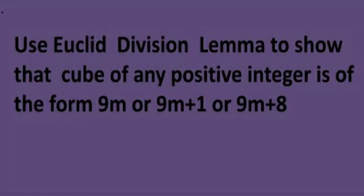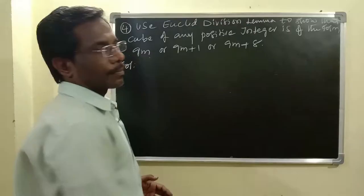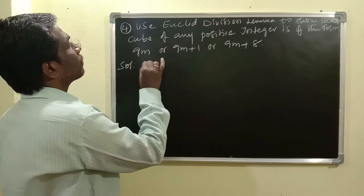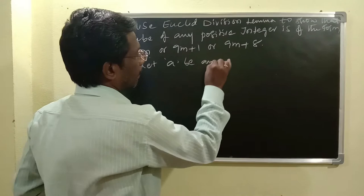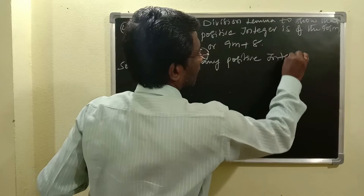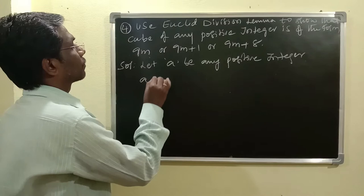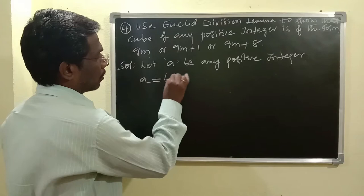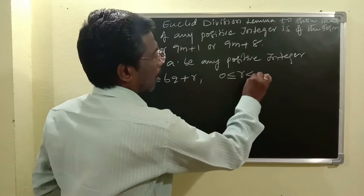Now I am explaining the next question, question 4. The fourth question is: use Euclid's Division Lemma to show that the cube of any positive integer is of the form 9m, or 9m plus 1, or 9m plus 8. Solution: let a be any positive integer. The equation of Euclid's Division Lemma is A equals BQ plus R, where 0 is less than or equal to R, less than B.